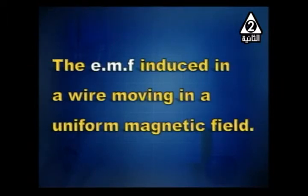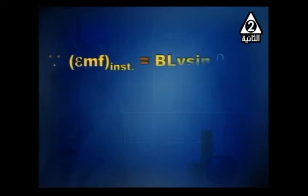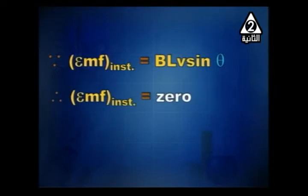When does the EMF induced in a wire moving in a uniform magnetic field equal zero? This happens when the wire is moved parallel to the field. The expression for induced EMF is BLv·sinθ, where B is magnetic flux density, L is the length of the wire, v is linear velocity, and θ is the angle between the motion of the wire and the field. If moved parallel, θ = 0 and sine 0 = 0, so EMF = 0.